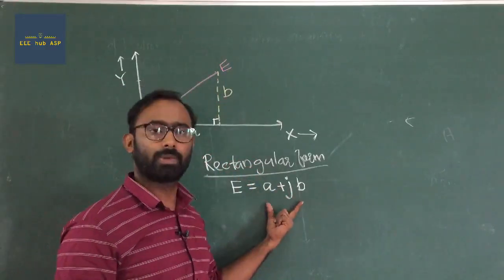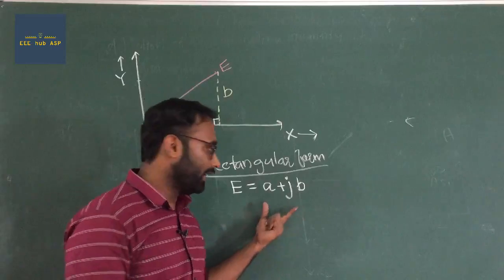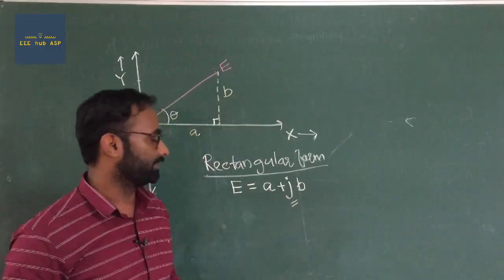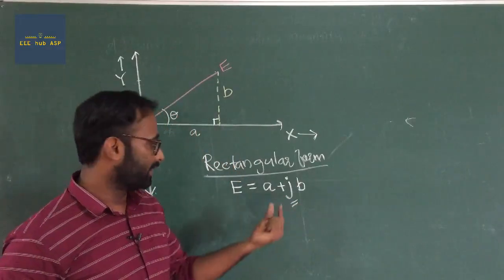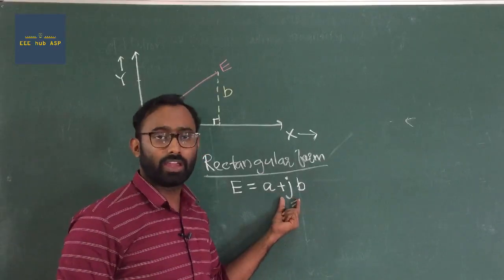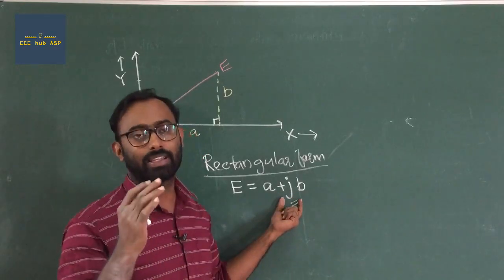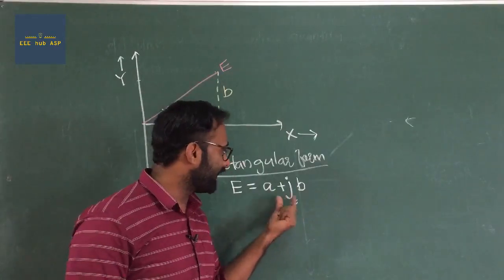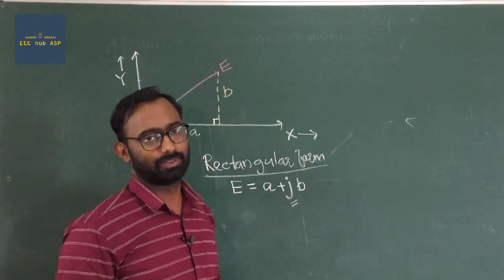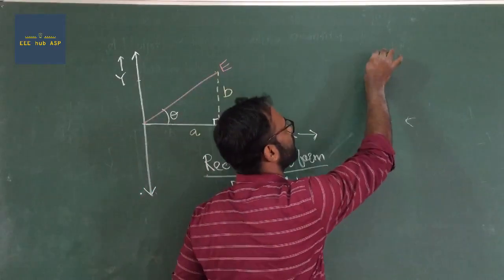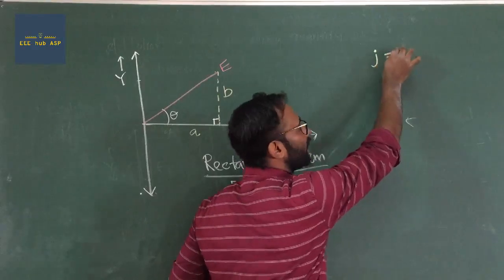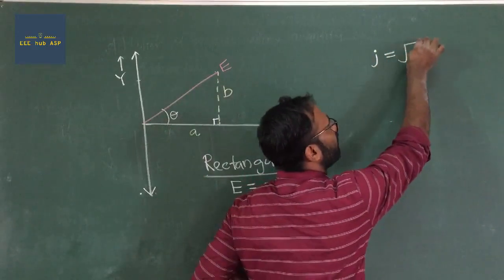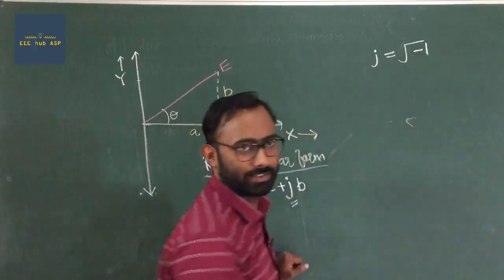Rectangular form. J is used. I am going to give the value: J is equal to the square root of minus 1.